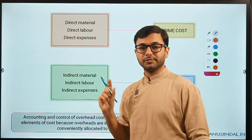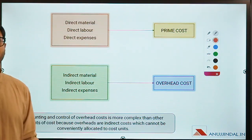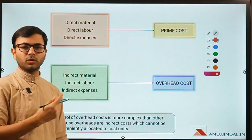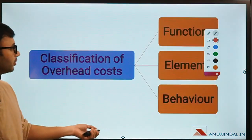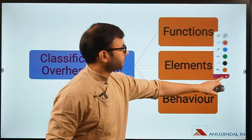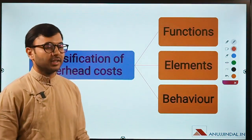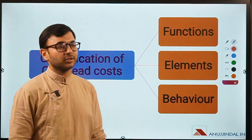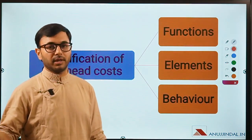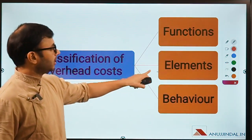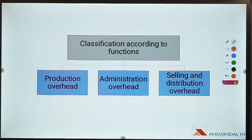Accounting and control of overhead costs is more complex than other elements of cost because overheads are indirect costs which cannot be conveniently allocated to cost units. That is exactly what happened when we discussed the first example — it was a complex phenomenon. We are not going to get into those complex situations because they are not expected in the exam. Now, classification of overheads: there are different ways of classifying overhead costs — function-based, element-based, or variability/behavior-based classification.